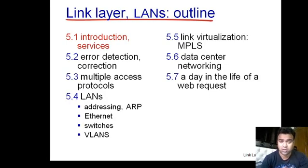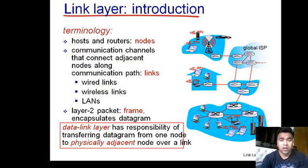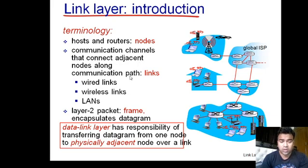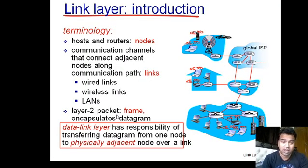Now let's come to the introduction of the Data Link Layer. The key terminologies we'll use: hosts and routers are called nodes; communication channels connecting adjacent nodes along a communication path are called links, which may be wired, wireless, or LANs. Layer 2 packets are called frames — the Data Link Layer is responsible for delivering frames from the current node to the next node.